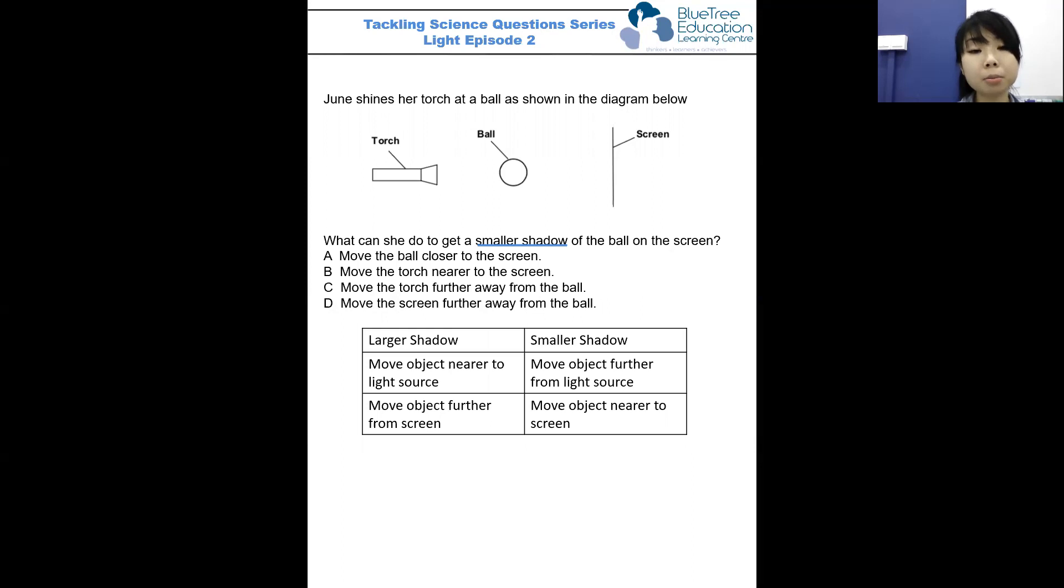Let's look at the options we have. A, move the ball closer to the screen. Yes, this will allow me to form a smaller shadow. Now, if I move the torch nearer to the screen, I'm actually also moving the torch nearer to the ball. Take note that this will actually give me a larger shadow, so this is incorrect.